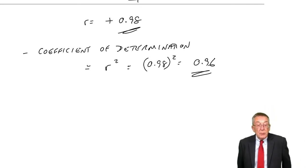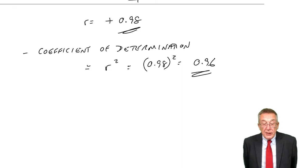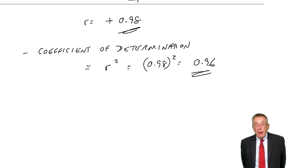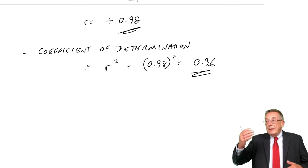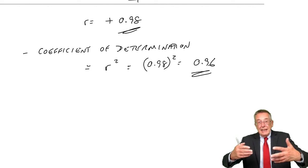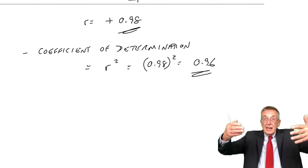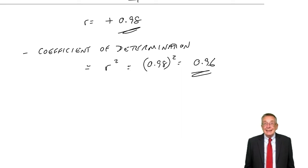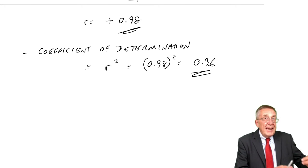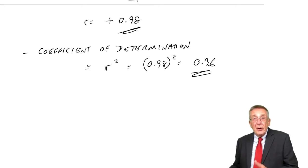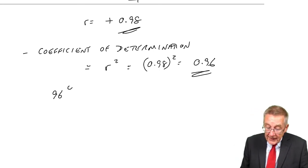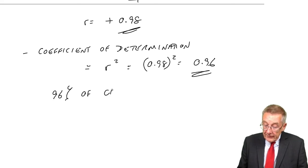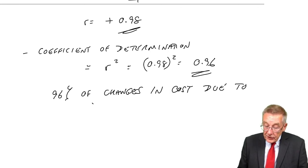What it means: it is a measure of how much of the variation in the dependent variable is explained by the variation in the independent variable. Our cost depended on the production. If it was perfectly linear, then 100% of the changes in the output, we could predict the changes in the cost. Here, we say 96% of the changes in the cost are due to changes in production.